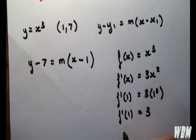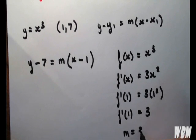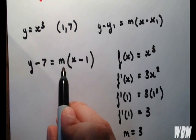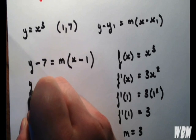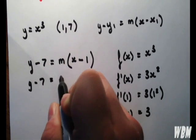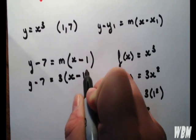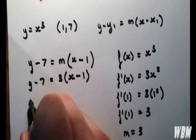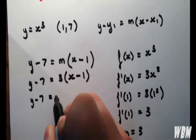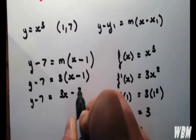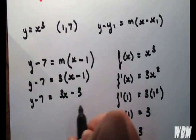So, we can write m equals 3, and substitute it back into our equation. And we can expand. So, we have 3x minus 3, and we add 7 to each side.